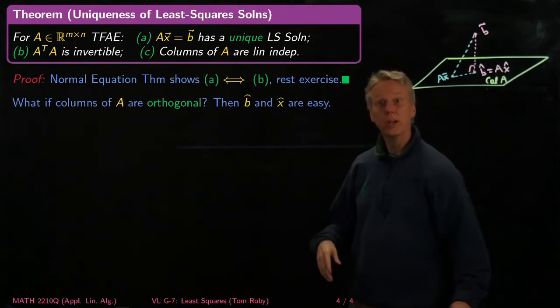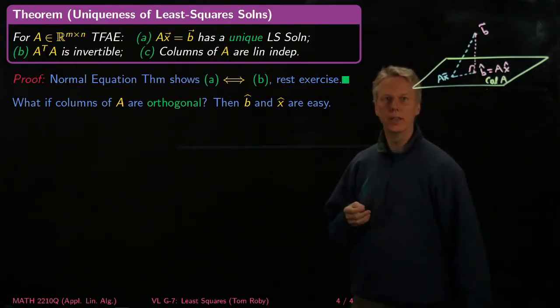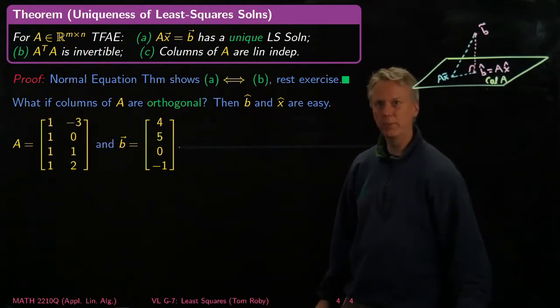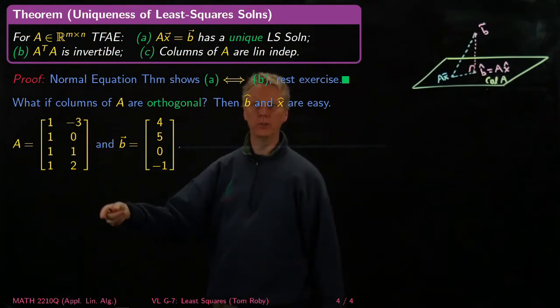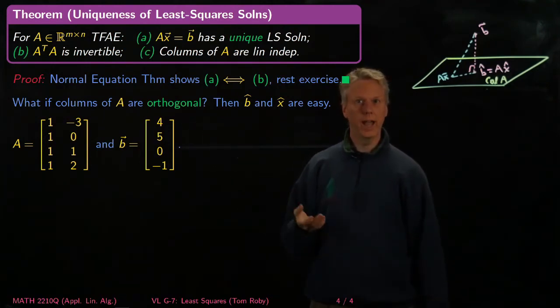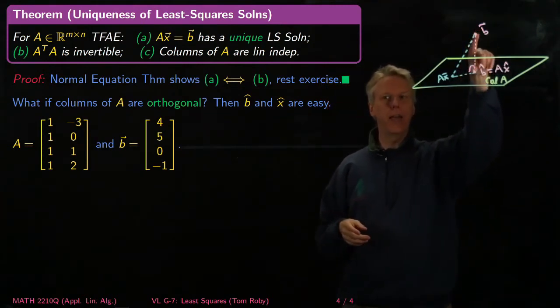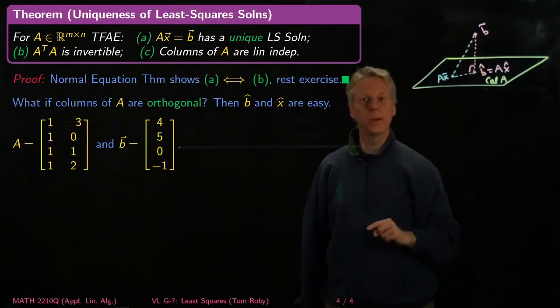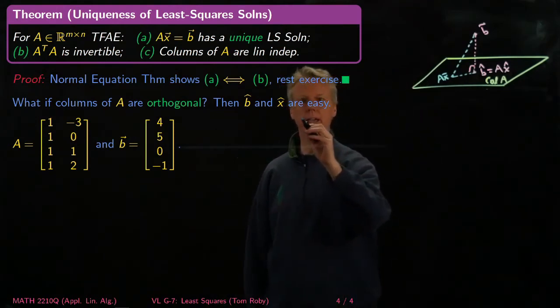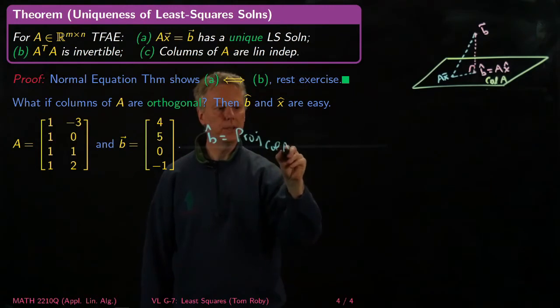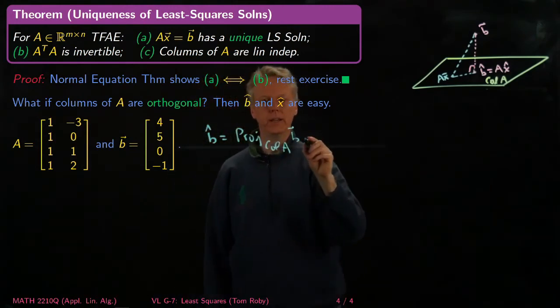But what I'd like to focus on right now is, what if the columns of A are actually orthogonal? We know that orthogonal and orthonormal bases are really good. And my claim is that then B hat and X hat are really easy to compute. So let's take a look at an example. So if A is this matrix, it's easy to check that the inner product of those two columns is zero. And now what I want to find is what is X hat and B hat. Well, remember, we've got this picture here. Now the column space of A is given by an orthogonal basis. And we know what the formula is for projecting a vector onto a subspace that has an orthogonal basis.